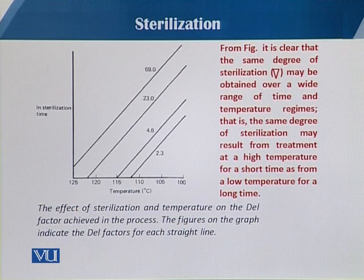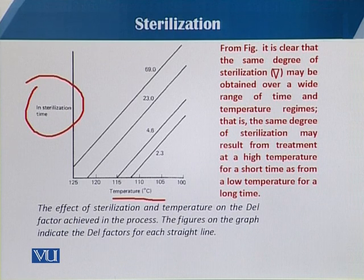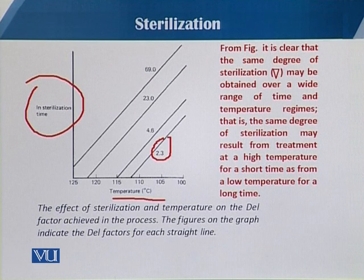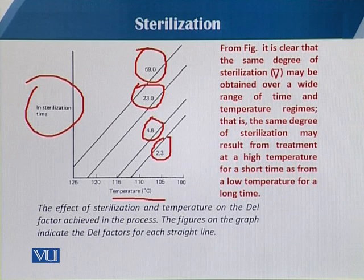When we draw the graph between the natural log of time against absolute temperature, we can see the degree of sterilization — the Del factor — obtained over a wide range of times. With different time patterns we have Del factor values of 2.3, 4.6, 23, and 69.6 corresponding to different temperatures. This graph shows the effect of sterilization temperature on the Del factor achieved during the process.